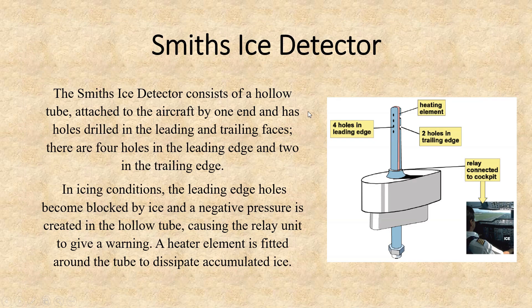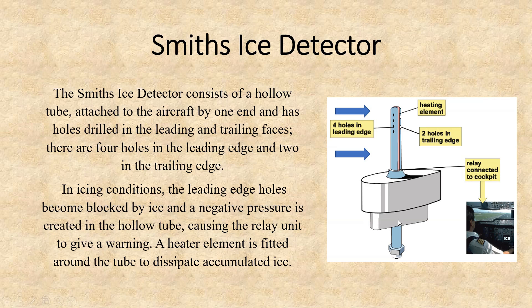The second type of ice detector is called the Smith's ice detector. You can think of it as a tube with four holes on the leading edge and two holes on the trailing edge. The leading edge is the edge that goes into the wind. This device measures the pressure difference between the air entering the four leading-edge holes and the air coming out of the trailing-edge holes.